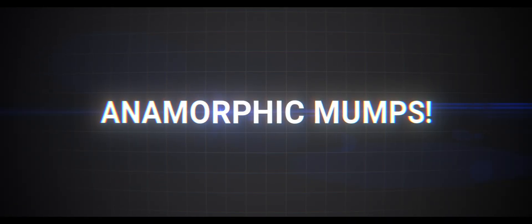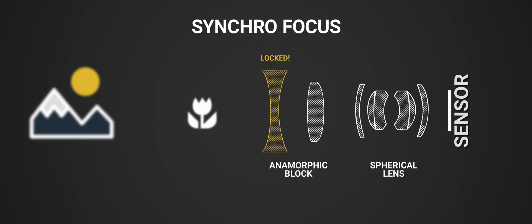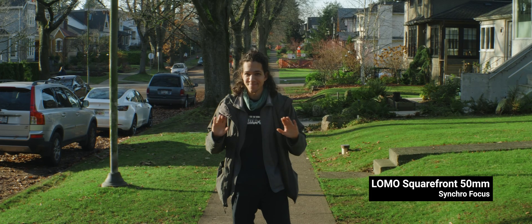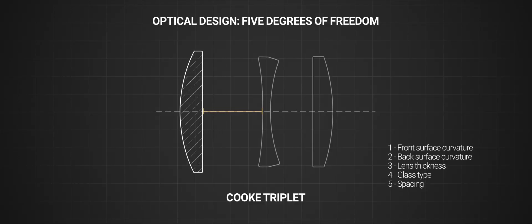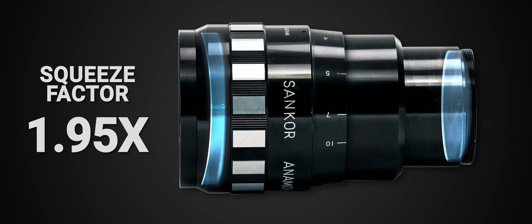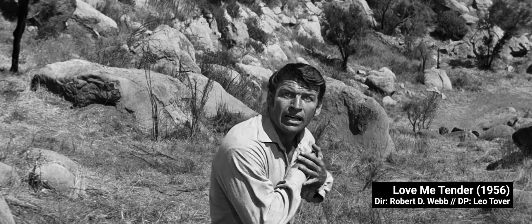Let's start with the only anamorphic trait that needs to be dead and buried. Many early anamorphic designs were made up of two cylindrical groups, and adjusting focus involved changing the distance between them. Mumps came from the fact that the change in the air gap also caused a change in magnification. While a lens displays the desired 2x squeeze at infinity focus, when pushed into a close-up, that number could drop all the way down to 1.6, for example. When projecting the film, this change in squeeze is very visible, leading to distorted proportions. Thankfully, we've mostly moved away from such designs, popularly known as double-focus or synchro-focus.